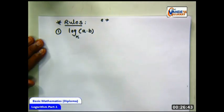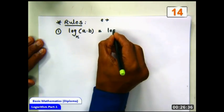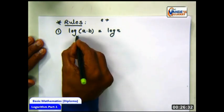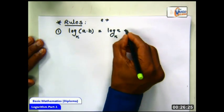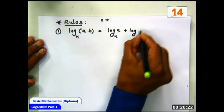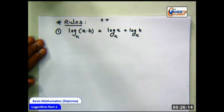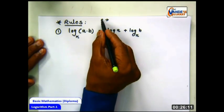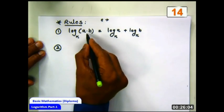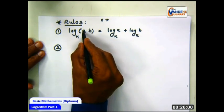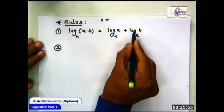Now the rules of logarithms. With respect to some base k, log of A·B equals log of A base k plus log of B base k. In other words, the logarithm of a product of numbers equals the sum of the logarithms.